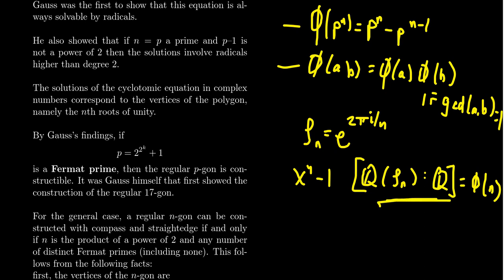It comes down to the constructability of the regular n-gon comes down to this phi function. Because of this, if you can construct the regular n-gon, it means you can construct this complex number. This is a complex number, right? We're thinking of it as cosine of 2 pi over n plus i sine of 2 pi over n. This is a point in the plane.